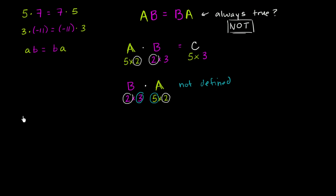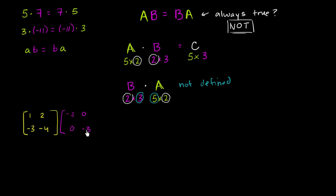Let's say I have the matrix with entries 1, 2, negative 3, negative 4, and I want to multiply that by the matrix with entries negative 2, 0, 0, negative 3. We've worked through matrix multiplication many times now. The first entry is going to come from looking at the first row and first column.